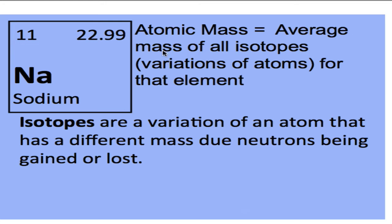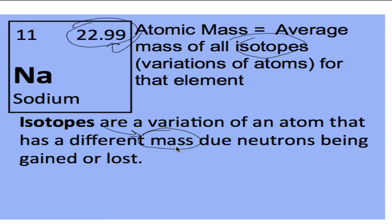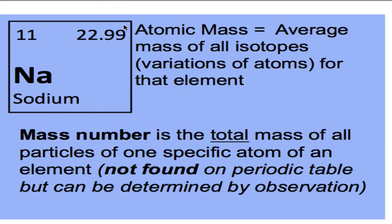The atomic mass, 22.99 for sodium, is the average — we've added up all the different isotopes of sodium, divided by how many there are, and got that number. An isotope is a variation of an atom that has a different mass due to neutrons being gained or lost. The number of protons can never change, but we can have variations in the number of neutrons within a particular atom, and that creates the variation in atomic mass.